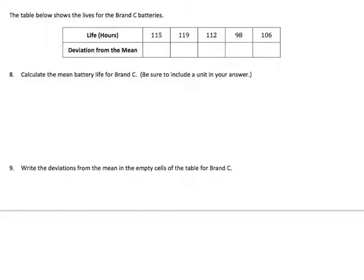Calculate the mean battery life for C. Again, I'm going into my calculator. I'm using the stat function. The mean is the x bar. And I got 110 hours. It is greater. That's good. So, I'm going to use that to fill in my deviation from the mean. 115 minus 110. 119 minus 110. 112 minus 110. 98 minus 110. And 106 minus 110.